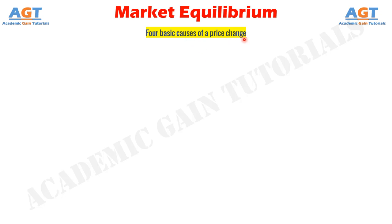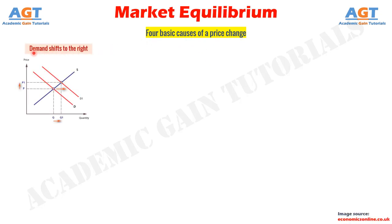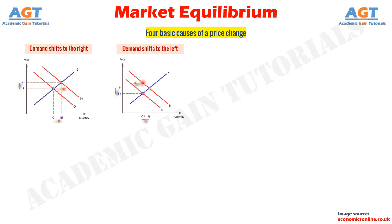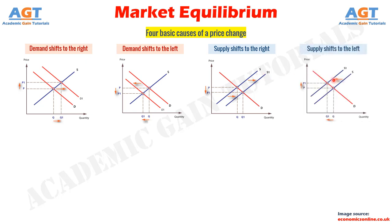There are four basic causes of a price change. Cause 1: an increase in demand shifts the demand curve to the right, raising price and output. Cause 2: a decrease in demand shifts the demand curve to the left, reducing price and output. Cause 3: an increase in supply shifts the supply curve to the right, reducing price and increasing output. Cause 4: a decrease in supply shifts the supply curve to the left, raising price but reducing output.